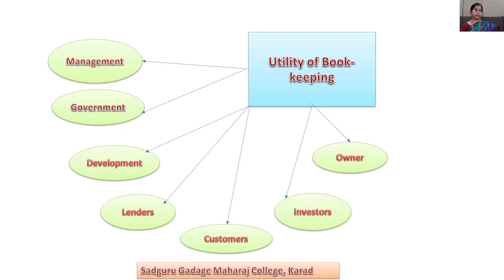Next is utility to development: a business enterprise can achieve business growth with the help of accounting. To conclude today's lecture, let us summarize what we have seen: meaning of bookkeeping and accountancy, evolution of accountancy, definition of bookkeeping, features of bookkeeping, objectives of bookkeeping, and importance and utility of bookkeeping.